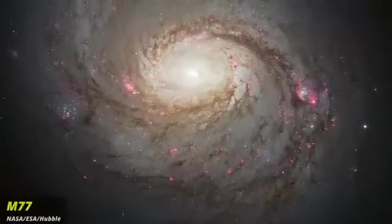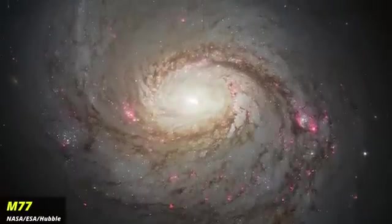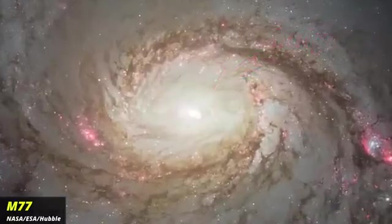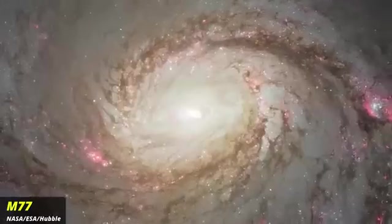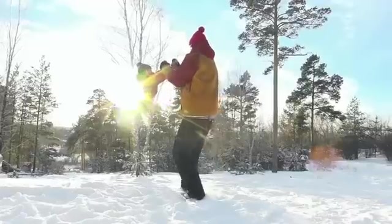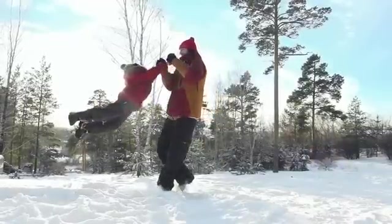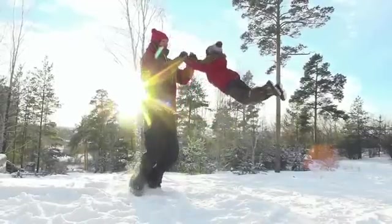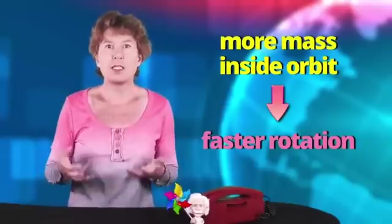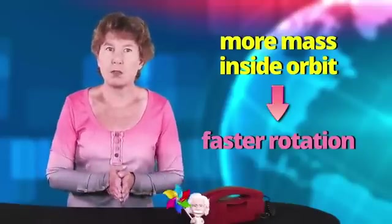Galaxies usually have most of their stars in the center. It's called the bulge of the galaxy. The biggest part of the visible mass is there. From this you can calculate how fast the stars further out should go around the center of the galaxy. Loosely speaking, the centripetal force that comes from the rotation needs to balance the gravitational pull. So the more mass inside the orbit, the faster the stars need to go around.